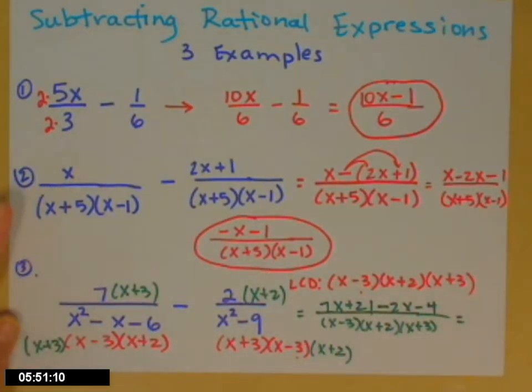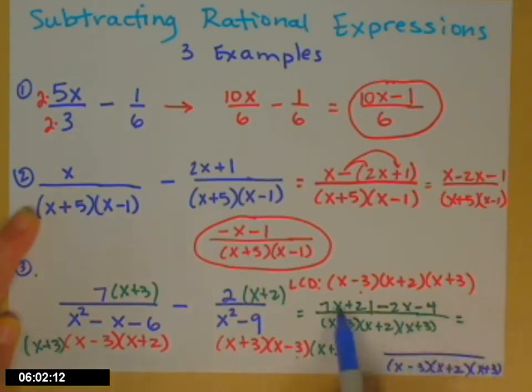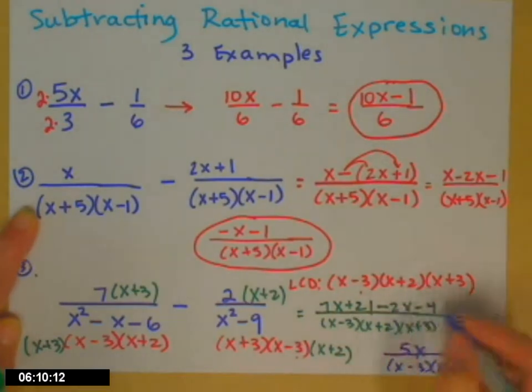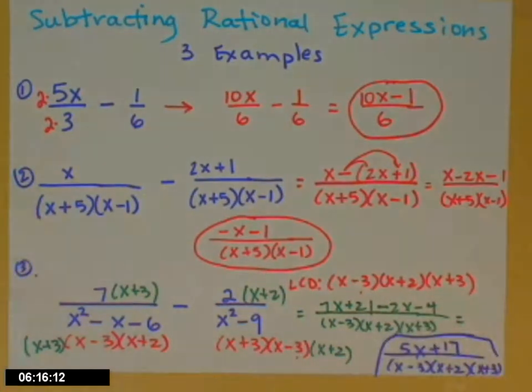Final answer. Here we go. It better not reduce because I don't have room for that. Let's see. I have 7x minus 2x. So that's 5x. And I have 21 minus 4. Only add and subtract alike terms. Plus 17. That's not going to factor, so I don't have to worry. Ta-da!